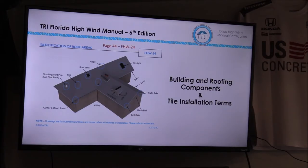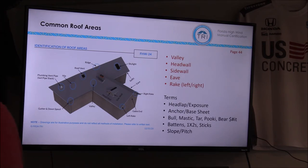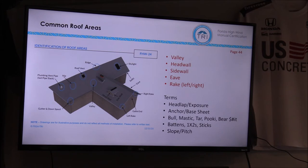If you turn to page 44, we'll look at the building and roofing components and tile installation terms. If you look at that drawing, you'll see the very common details that we know from any part of the country: a valley, a head wall, a side wall, the eave, the rake — both left and right — and then there are other terms more specific to tile, for example, headlap and exposure.